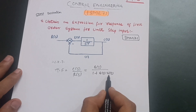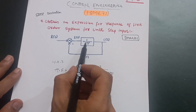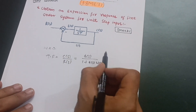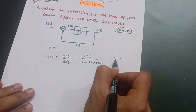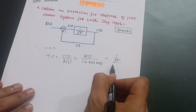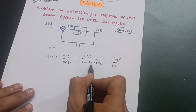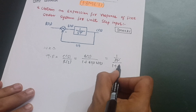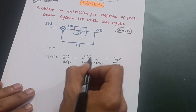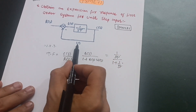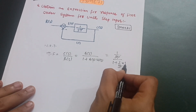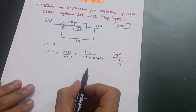In this transfer function, G(S) is equal to 1/(S·τ), and H(S) is the feedback path which is unity — that is 1. So the transfer function becomes: 1/(S·τ) divided by (1 + 1/(S·τ) × 1), and multiplying through by 1 gives us the simplified expression.